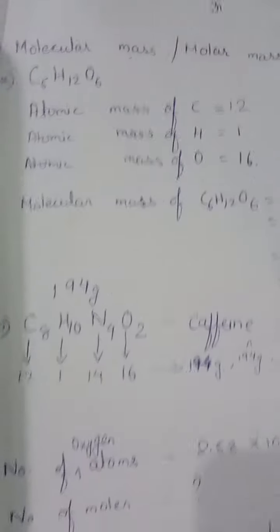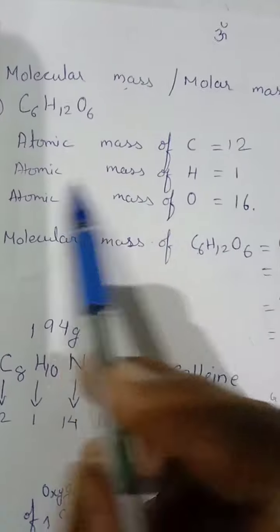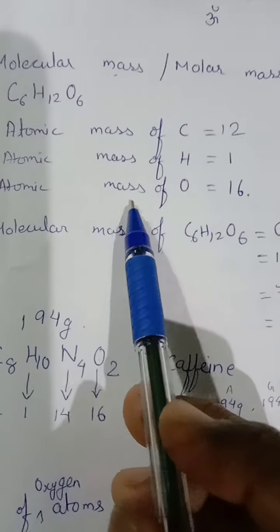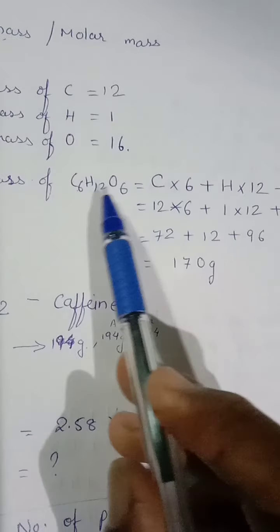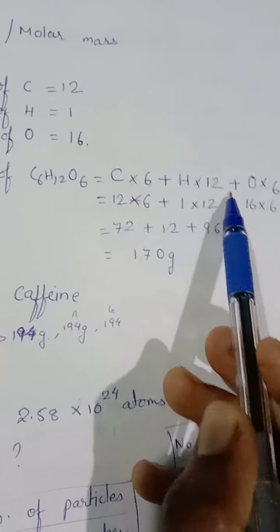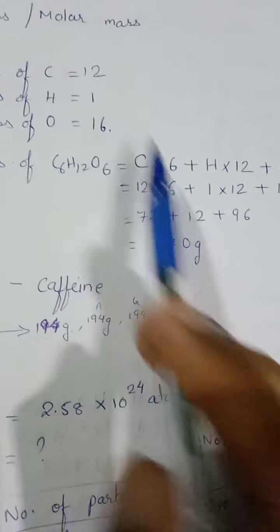I've already done glucose in your class. Atomic mass: carbon 12, hydrogen 1, oxygen 16. Molecular mass of glucose is C times 6 plus H times 12 plus O times 6. Putting all the atomic masses, you get 180 grams.